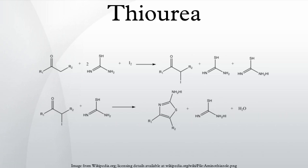Production: the global annual production of thiourea is around 10,000 tons. About 40% is produced in Germany, another 40% in China, and 20% in Japan. Thiourea can be produced from ammonium thiocyanate, but more commonly it is produced by the reaction of hydrogen sulfide with calcium cyanamide in the presence of carbon dioxide.